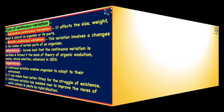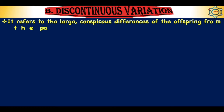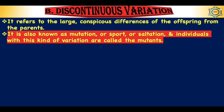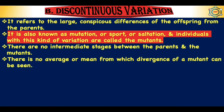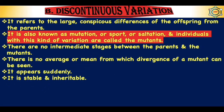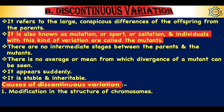The second type of germinal variation is discontinuous variation. It refers to large, conspicuous differences of offspring from parents. It is also known as mutation, sport, or saltation, and individuals with this kind of variation are called mutants. There are no intermediate stages between parents and mutants, no average from which divergence can be measured, and it appears suddenly, is stable, and is inheritable. Causes include modification in chromosome structure (deletion, translocation, inversion, duplication), alteration in the chemical nature of genes (addition, deletion, or substitution of nitrogenous bases in DNA), and changes in chromosome number.